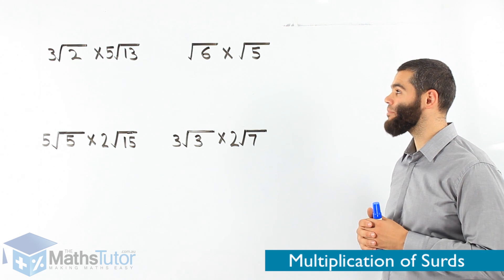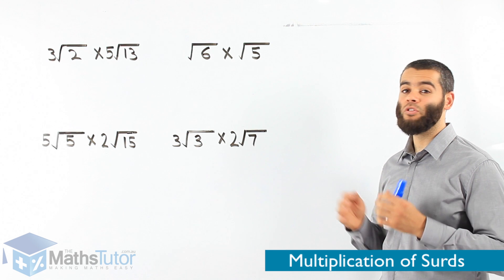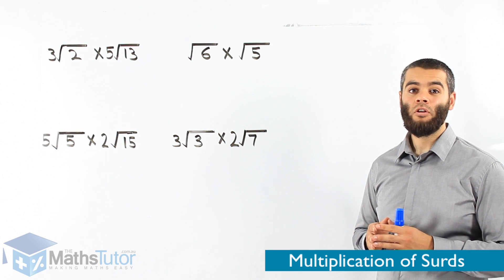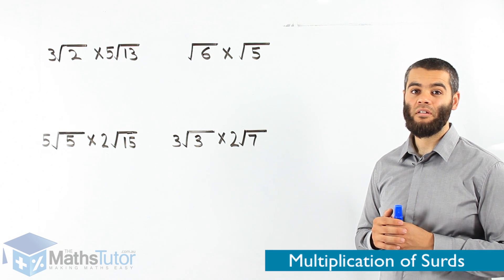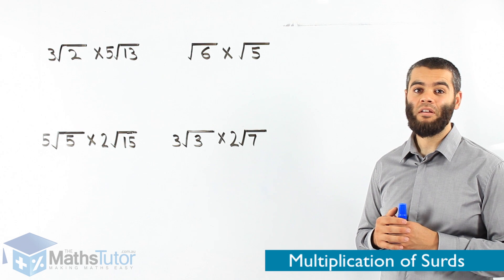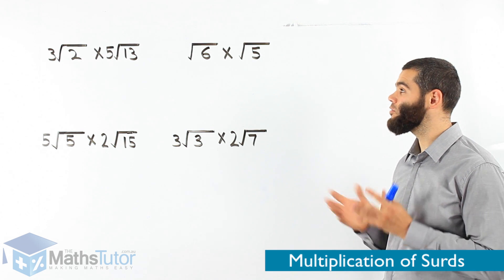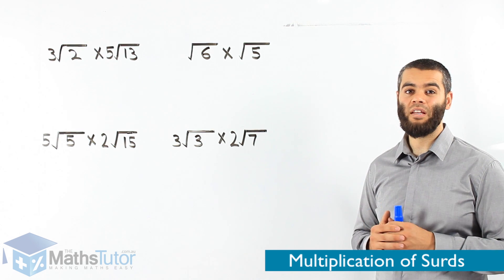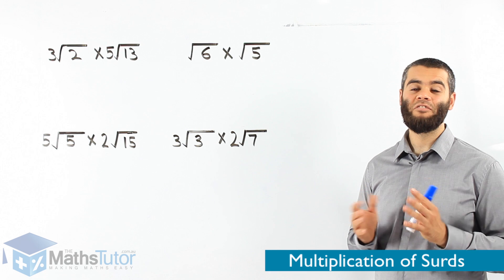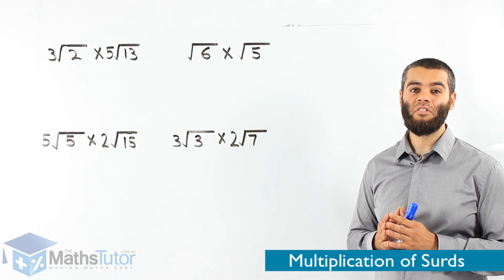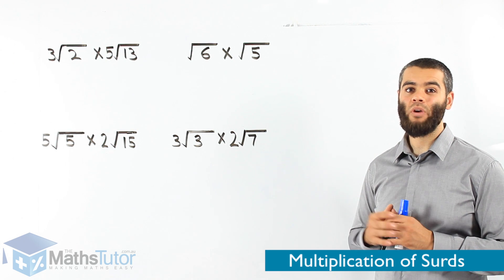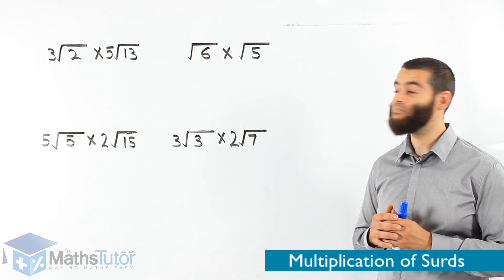Another example: root 2 times root 7. Very easy. 2 times 7 — root 14. Let's do some examples and understand it and show you how to set it up.